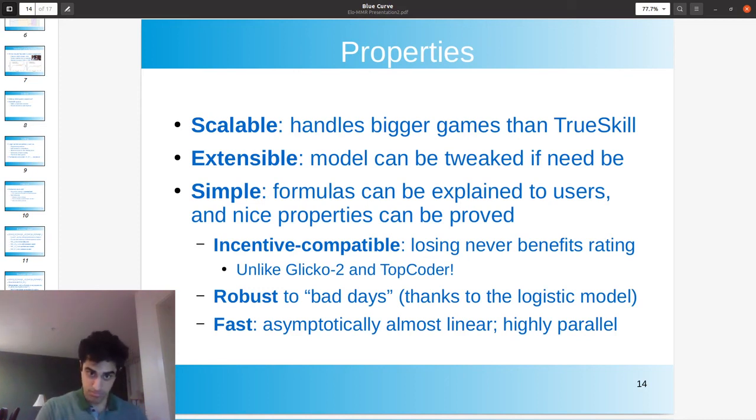For example, we know, we now know that unlike Glico2 and Topcoder, ELO MMR is indeed incentive compatible. It's also robust by using a heavy tailed performance model, such as the logistic distribution. It turns out that just following the Bayesian math, we get a system in which if you perform really well one day or really badly, let's say you have the worst off day possible. For example, you're doing an online competition and your Wi Fi shuts off.